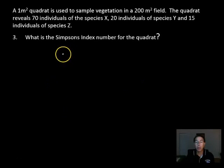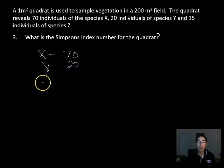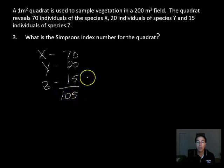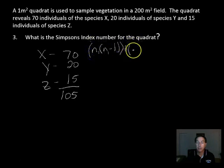Let's look at the last one. Simpson's index number for the quadrat. This is a rather lengthy one. First things we're going to do is get our species here. X, we had 70. Y, we had 20. And Z, we had 15. So our total here was 105 individuals total. Remember, our top number is n times n minus 1, and that's for the first one. Plus n2 times n2 minus 1, plus the second one, n3 times n3 minus 1.